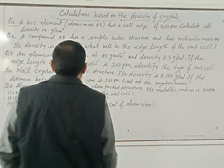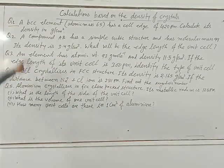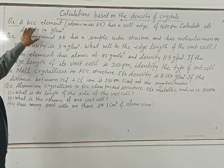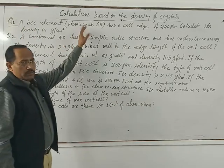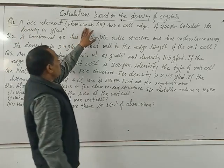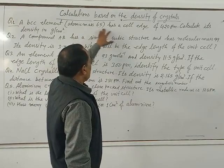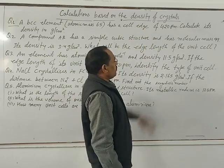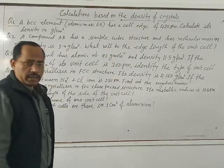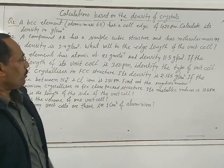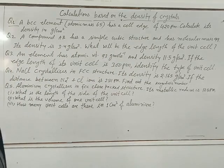First question: a BCC element with atomic mass 65 and edge length of 420 picometers — calculate its density.